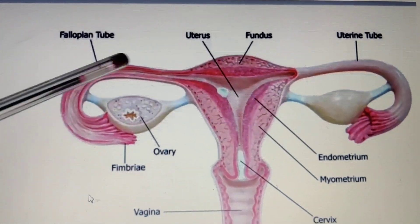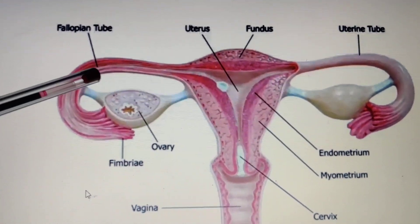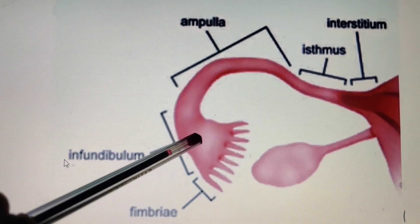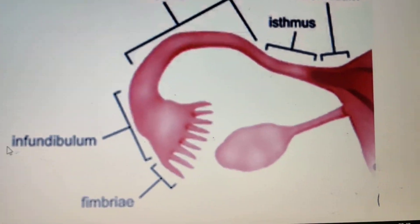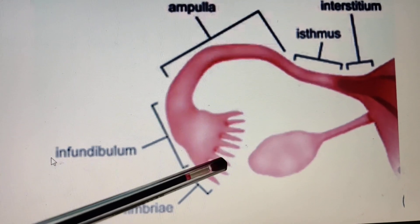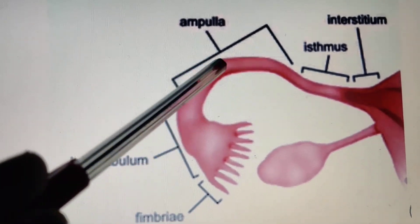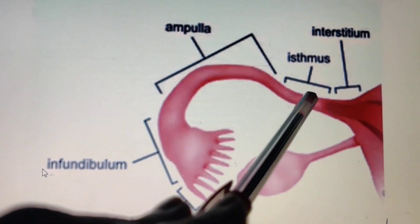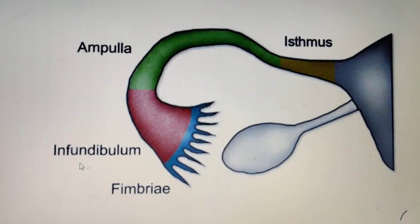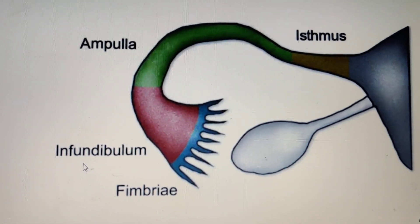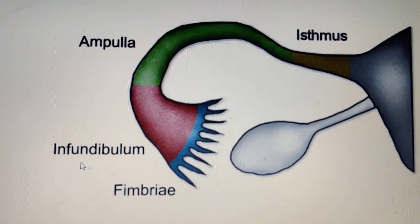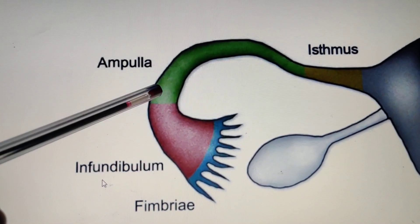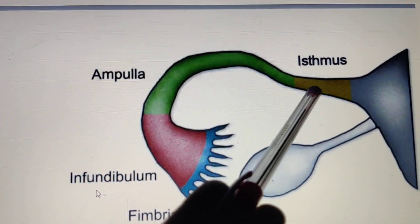To understand this, we will see another diagram. These are the ovaries. This funnel-shaped part is the infundibulum; these finger-like projections are fimbriae. Infundibulum opens into this part that is ampulla, and ampulla opens into the isthmus. We can also see all these parts in another diagram where the blue ones are fimbriae, this part is infundibulum, the green part is ampulla, and next to ampulla is isthmus.